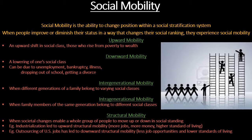Social mobility is defined as the ability to change position within a social stratification system. When people improve or diminish their status in a way that changes their social ranking, they experience social mobility. There are five different types. First, upward mobility is when a person shifts upward in social class — rising from poverty to wealth by working hard, getting a college degree, doing an apprenticeship, and landing a stable job.